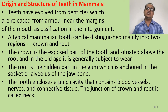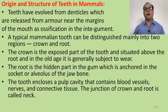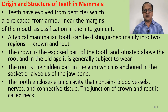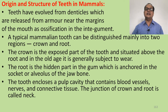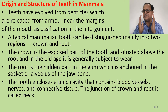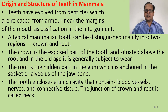Regarding origin and structure of teeth in mammals: teeth have evolved from denticles released from armor near the margin of the mouth on ossification in the integument. A typical mammalian tooth can be distinguished into three parts: crown, root, and neck. The crown is the exposed part, the root is the embedded part, and the neck is the middle part where the two meet. The tooth encloses a pulp cavity containing blood vessels, nerves, and connective tissue.